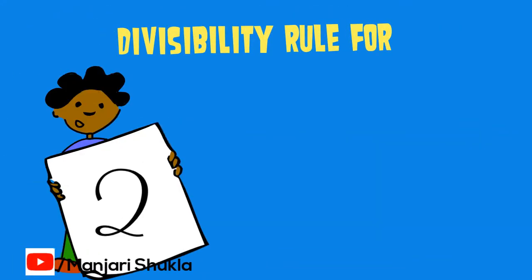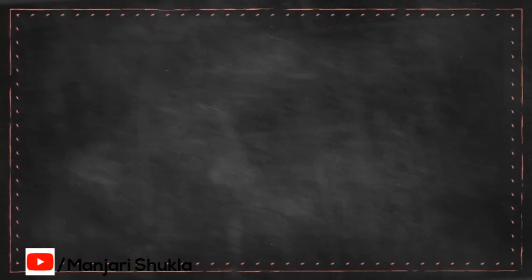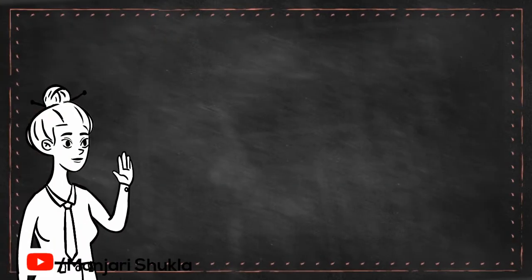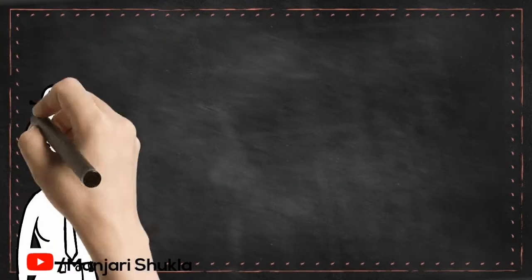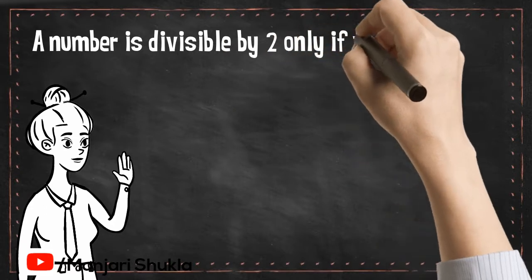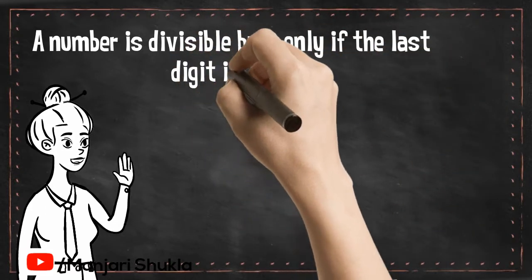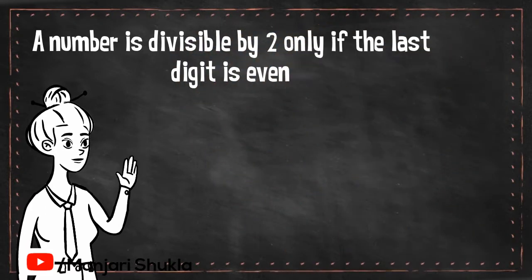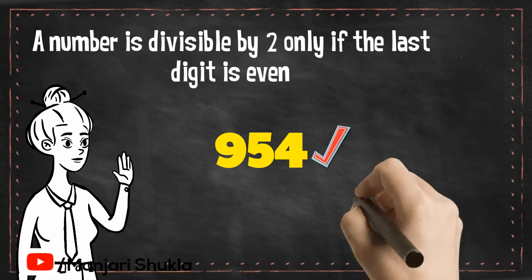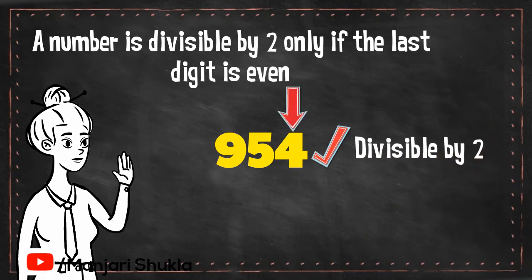Divisibility Rule 2. A number is divisible by 2 only if the last digit is even. For example, the number 954 is divisible by 2 because 4, the last digit, is even.